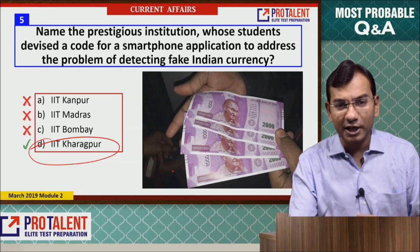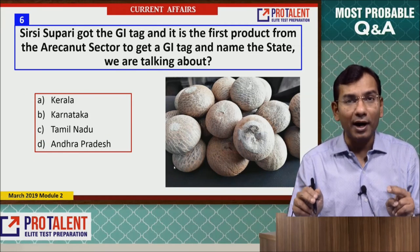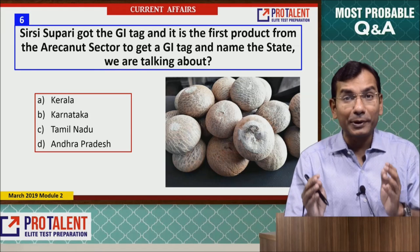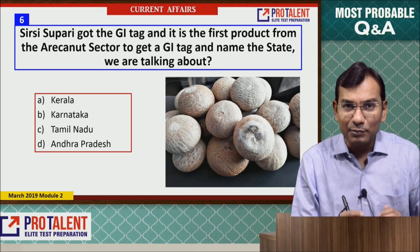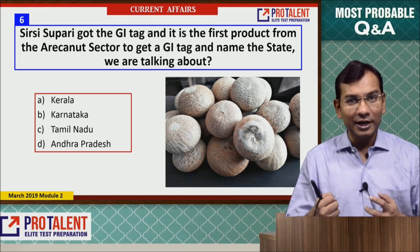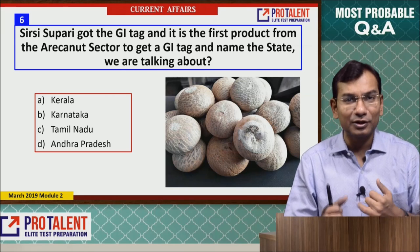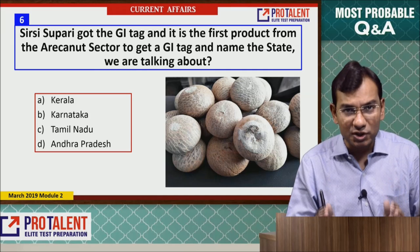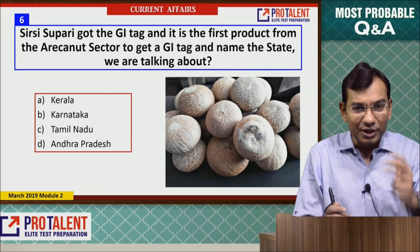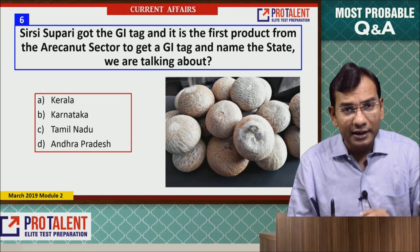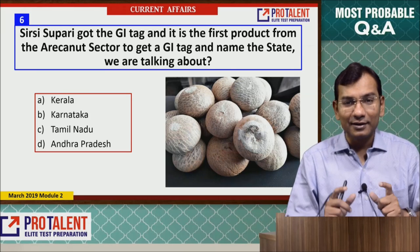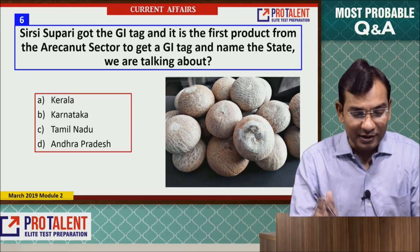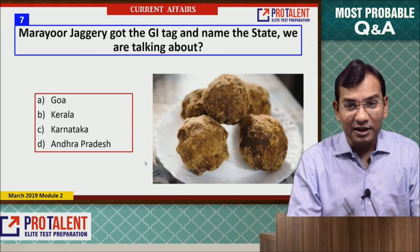Question 6: Sirsi Supari got a GI tag. GI stands for Geographical Indication — products famous from a particular area receive this tag, which is part of intellectual property rights, alongside patents, copyrights, and trademarks. GI tag is given to an area, not a specific person. Sirsi Supari is the first betel nut to receive a GI tag, and it is from Karnataka.